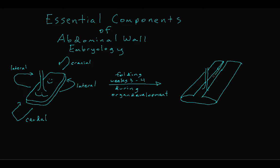The folding of the lateral edges also creates two spaces bilaterally oriented in the cranial-caudal axis, known as the pleuroperitoneal canals, which are the precursors to the pleural cavity and the peritoneal cavity.